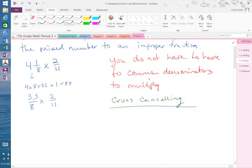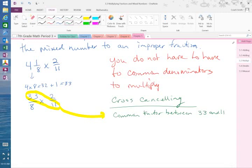Cross-canceling. We can cross-cancel. Cross-canceling means that I look at the numerator of one fraction and the denominator of the other fraction to see if there is common factors between 33 and 11. Is there a common factor between 33 and 11? Yes. What? 11.